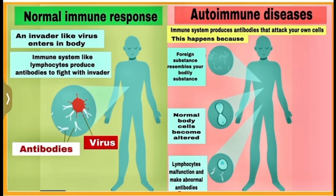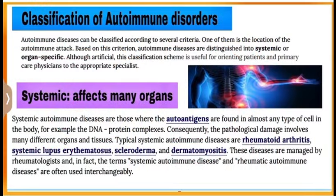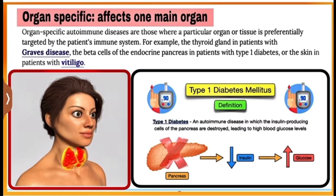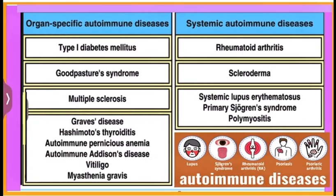This picture shows the normal immune response and response in autoimmune diseases. Next is the classification of autoimmune disorders into systemic and organ-specific, along with some examples of each.